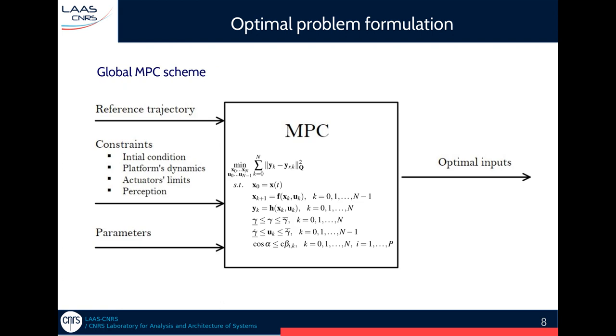Now we can define our MPC framework. So we input a reference trajectory that corresponds to the task that we want to fulfill. We are subject to a set of constraints that are the actuation constraint and the perception constraint that I just presented, but one could also define some constraints related to the environment, such as position or speed constraints, and we use the parameters to input the data coming from the sensors.